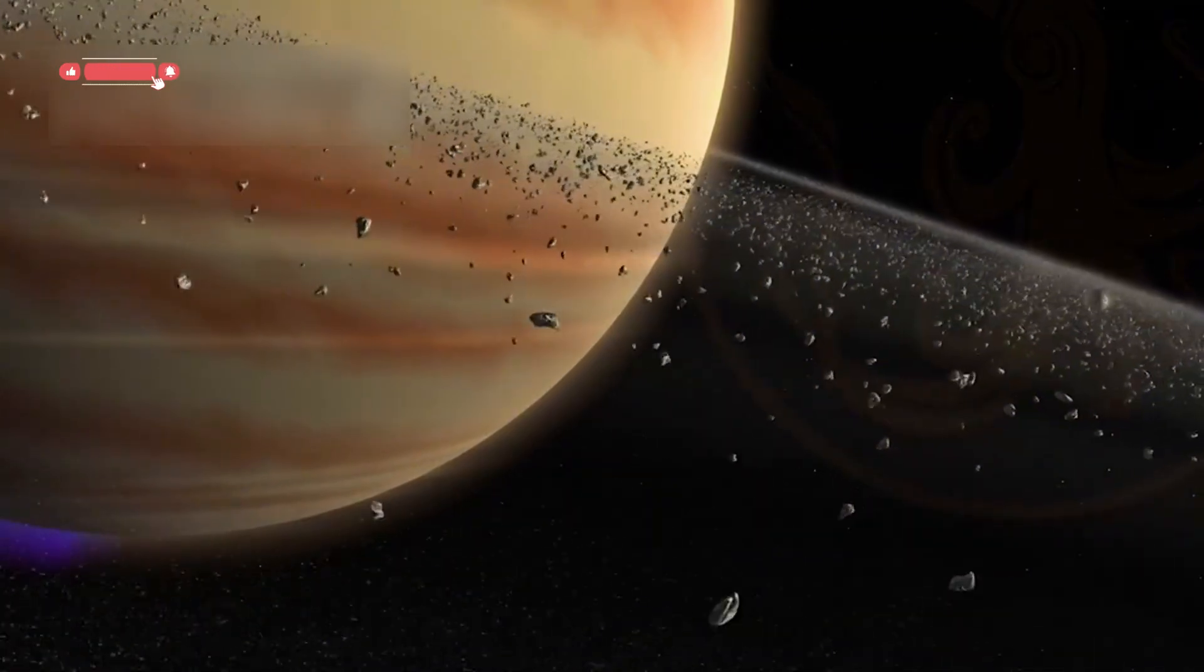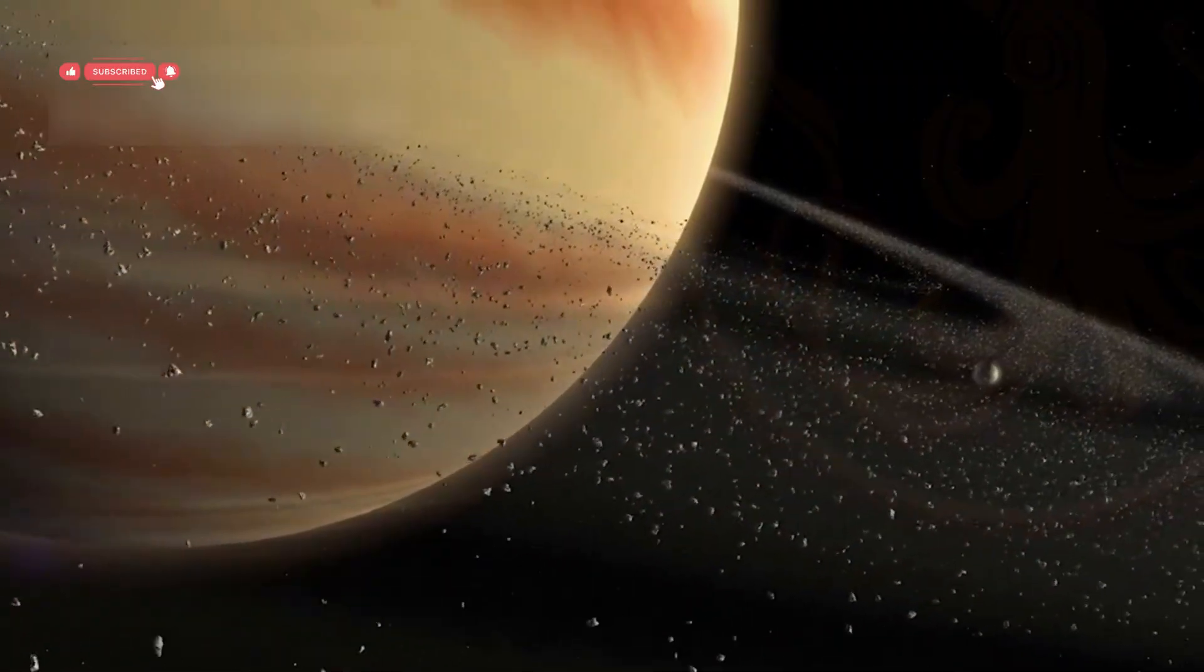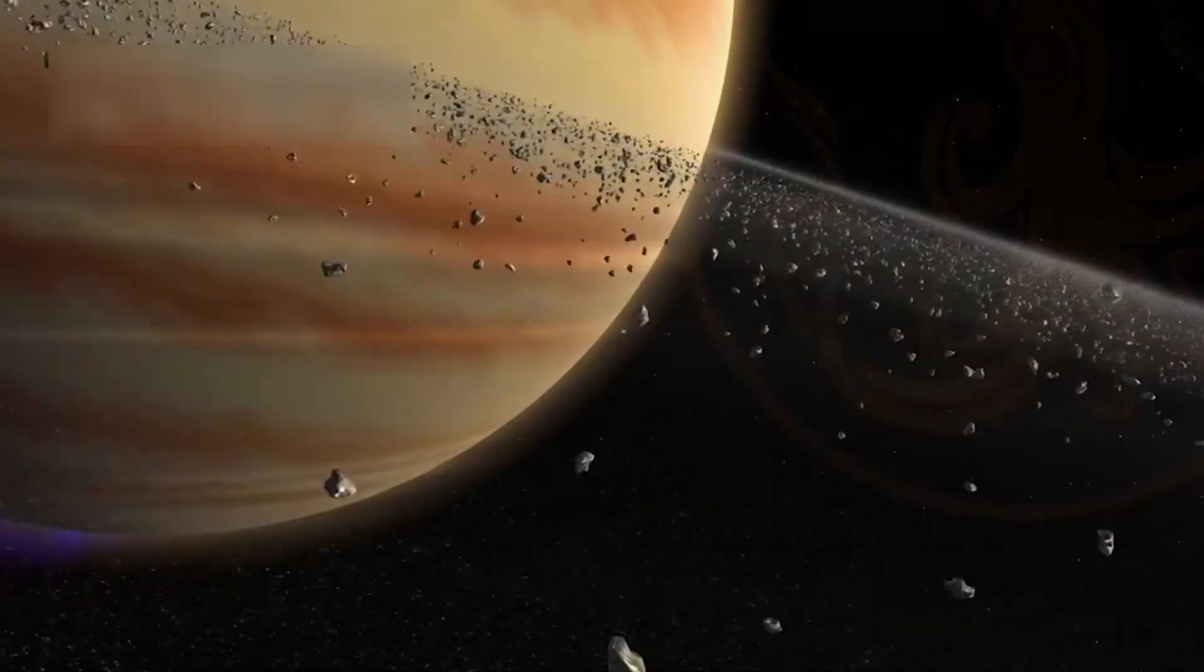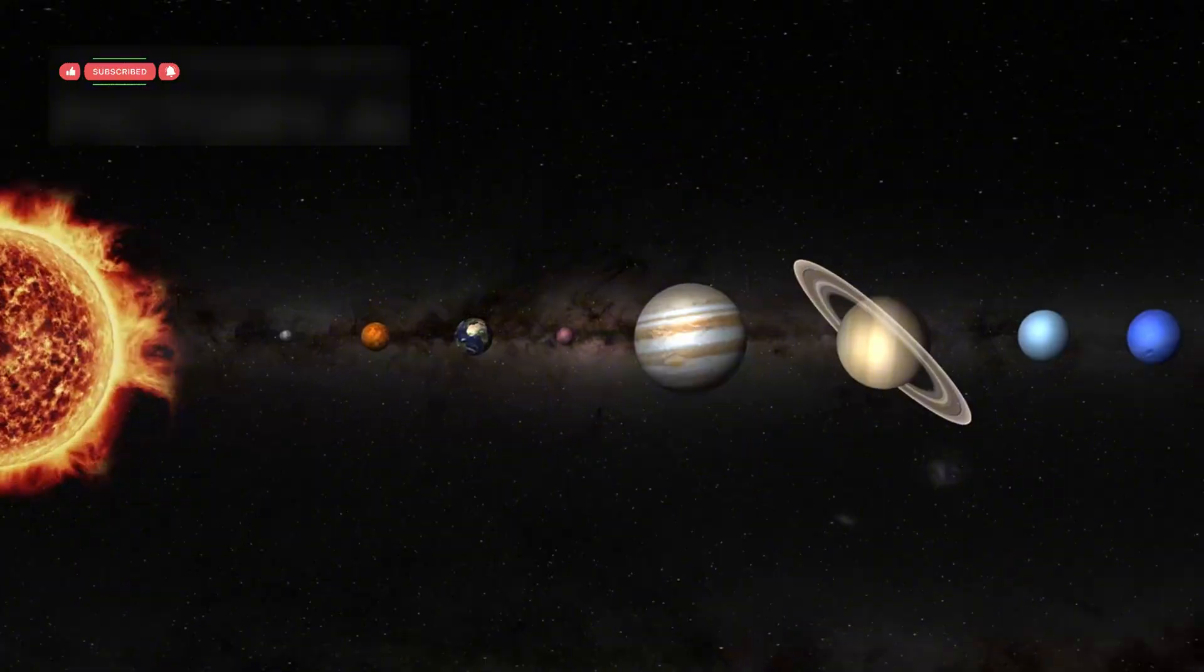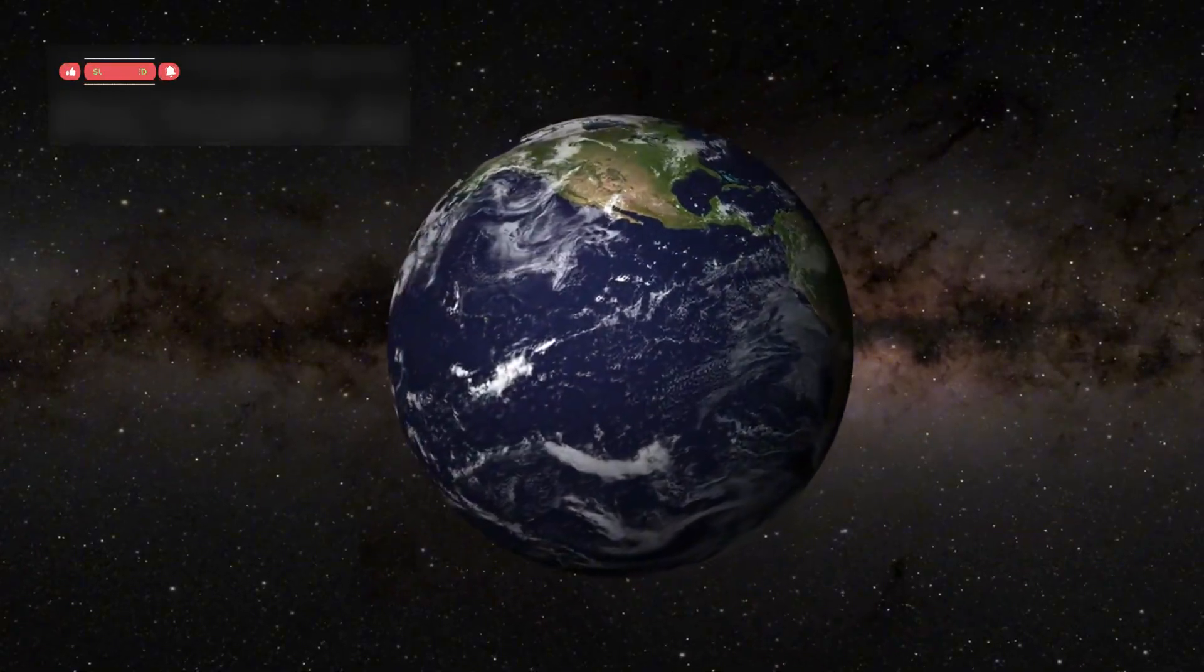Even from millions of miles away, the probes returned sharp images of Saturn's disk, its rings, and many of its moons. This proved that they could photograph worlds in great detail across the solar system.